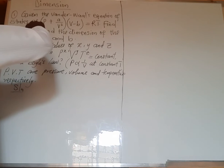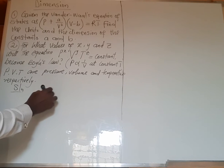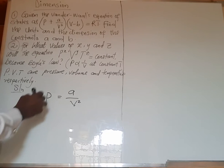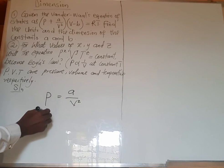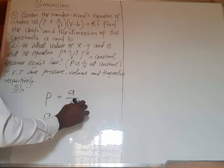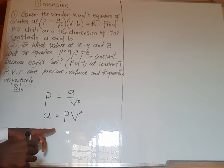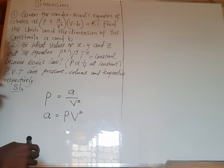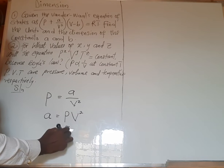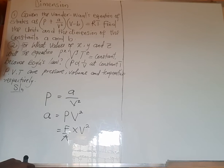The relationship is given by P equals a over V squared. From this, we make 'a' the subject of the formula, so a equals P times V squared. From there, we need the formula for pressure: pressure equals force over area, multiplied by V squared.